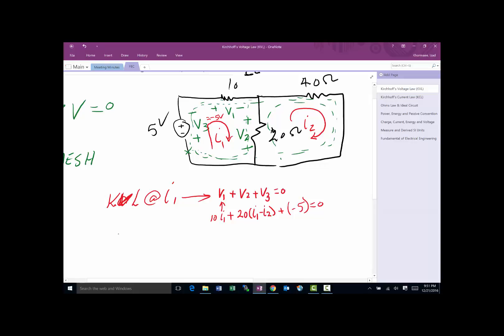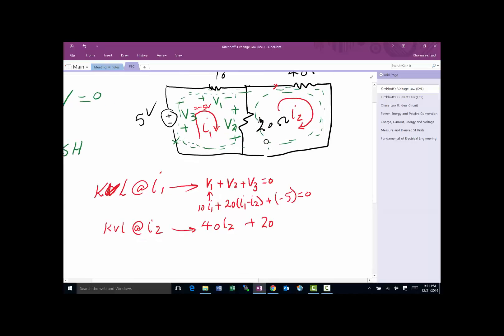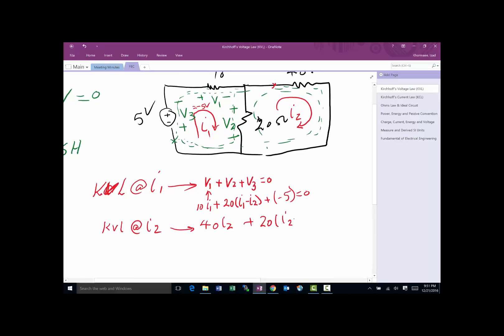Once we do KVL at I2, we do not have to go through this first step process to write it all. We just start at any point on the circuit and walk around. This is 40 I2. Since this resistor is not shared with anybody, the current is exactly I2. So we're going to have 40 I2 plus 20 times—now it's interesting because we're going in this direction—so it's I2 minus I1.